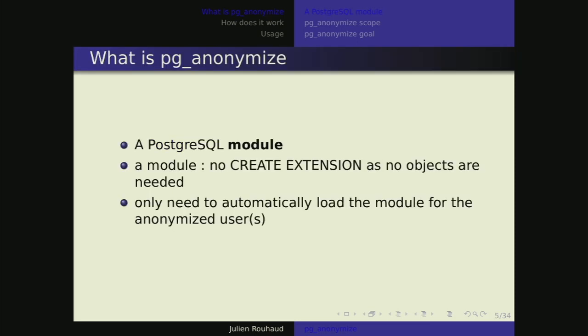So, PG Anonymize. The name of the talk is 'a new extension,' but explicitly it's a module, not an extension. We tend to use the same word for both, but to be clear on the difference: a module is compiled code in a shared library that you load into the Postgres server to execute some custom code. The extension part is only when you create an extension, which brings new objects to your database like a new table or row function. For this module, we don't need to store anything new, because Postgres already has a way to store what we need for the anonymization.